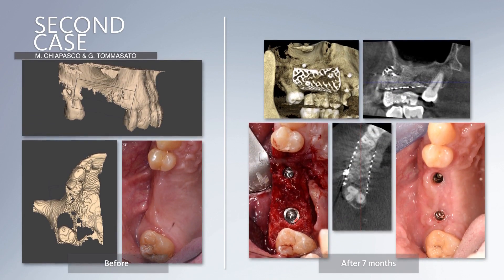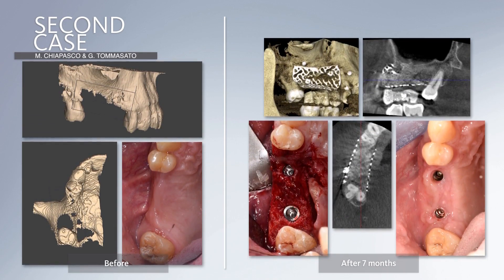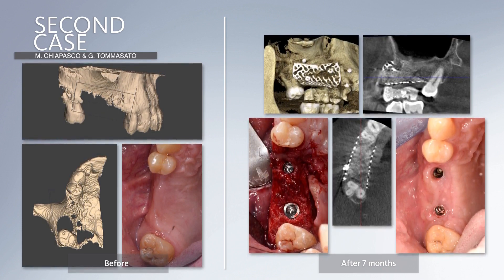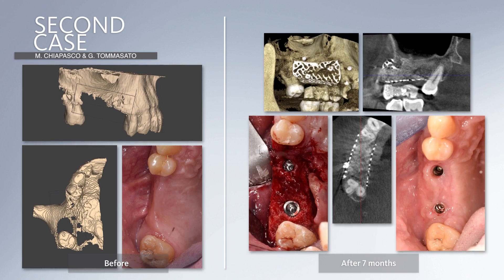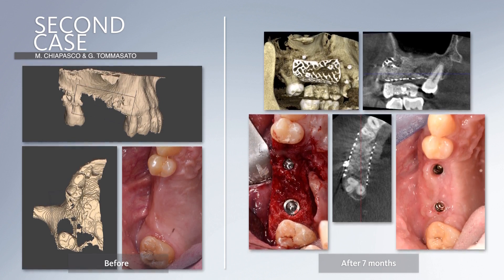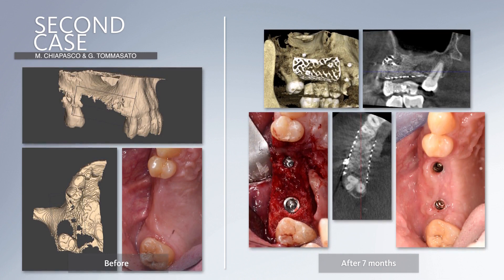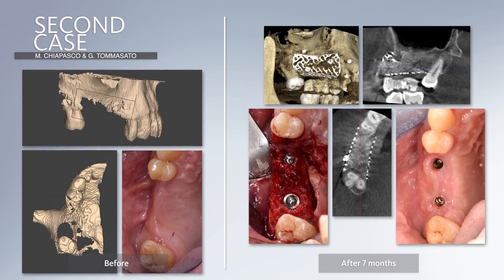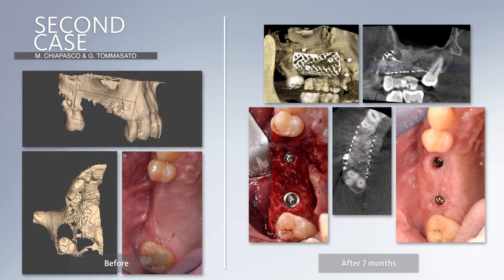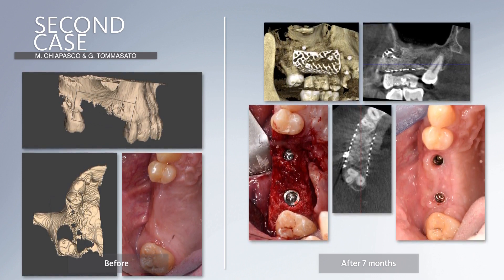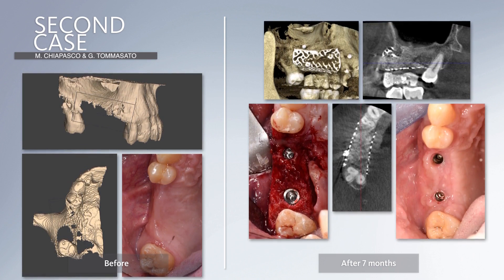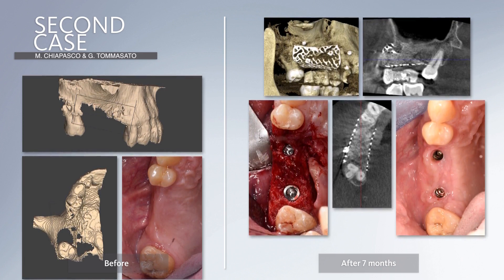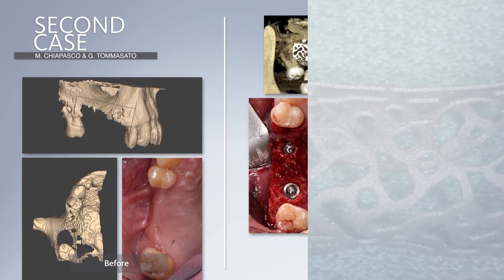A second case is presented here. It is a defect in the upper maxilla where the same procedure has been performed. There are no detailed surgical images, but you can see the initial situation, the corrections achieved with the titanium mesh, and at the time of reopening a beautiful integration of new bone with excellent thickness and height, allowing placement of two implants in a prosthetically driven way.